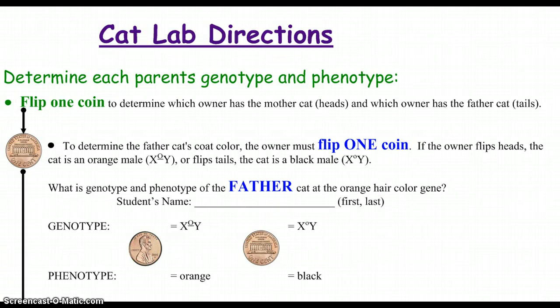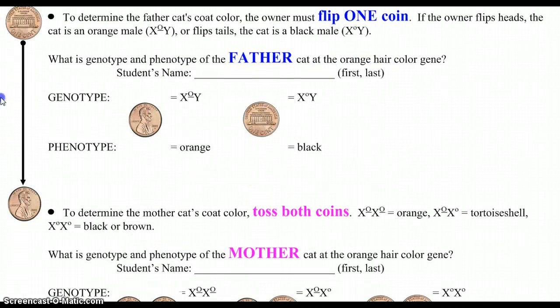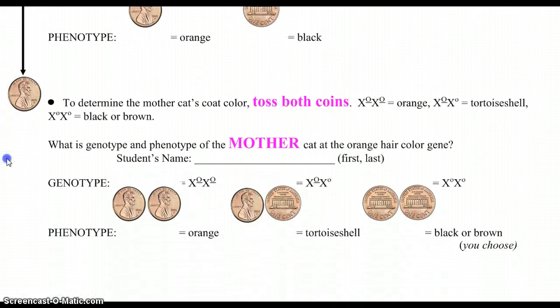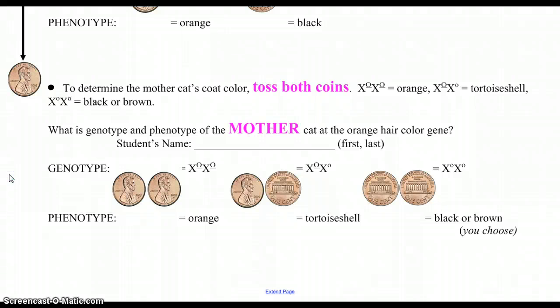Let's take it to the mom now. To the mom, we're going to toss both coins, so she'll need to take that coin from dad. We're going to toss both coins, and XX denotes a female, so you'll notice that the superscript behind each X is a capital O.